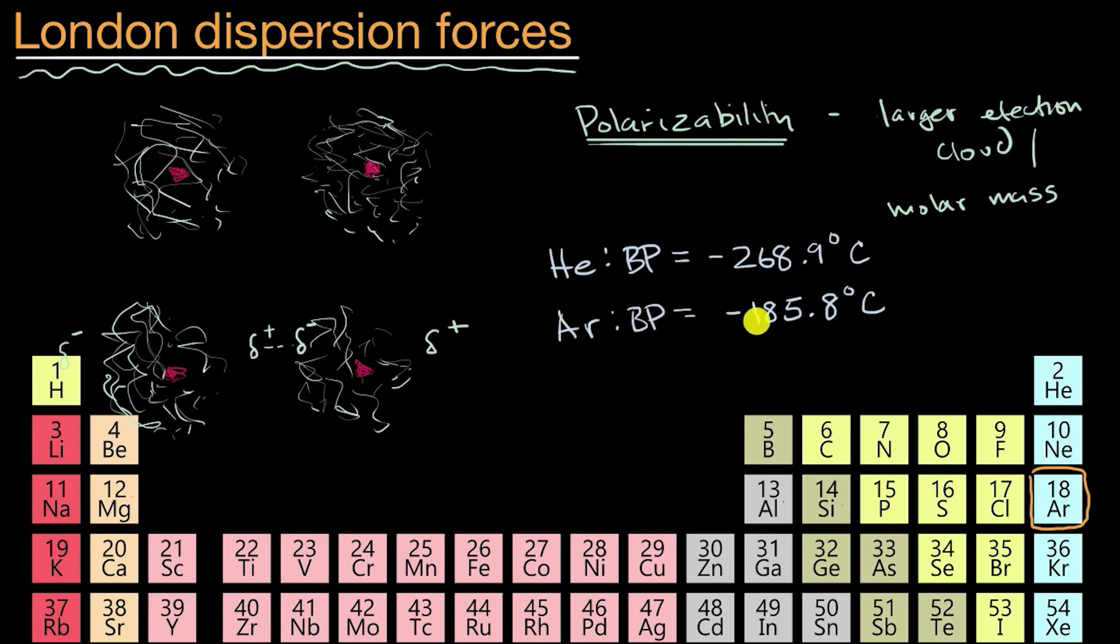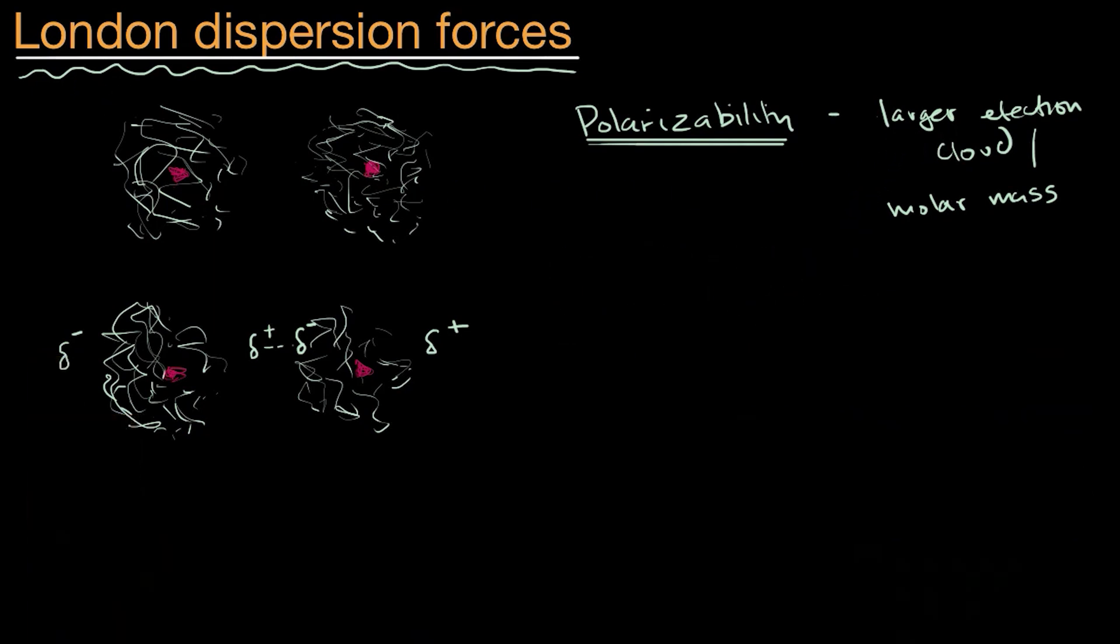But that doesn't happen for argon until a good bit warmer, still cold by our standards, and that's because it takes more energy to overcome the London dispersion forces of argon because the argon atoms have larger electron clouds. So generally speaking, the larger the molecule, because it has a larger electron cloud, it'll have higher polarizability and higher London dispersion forces.